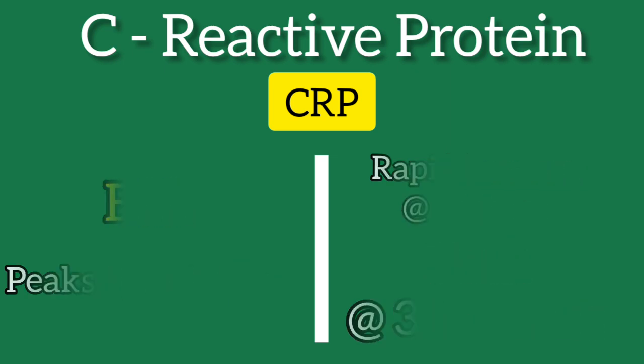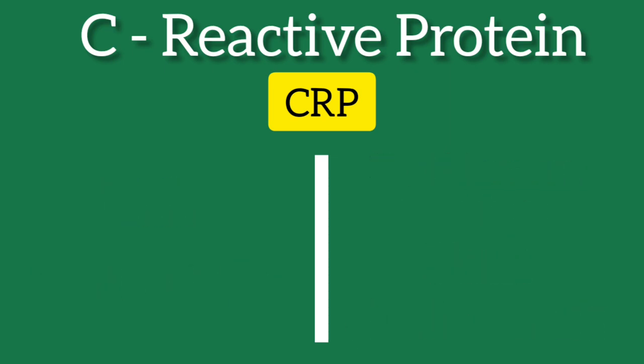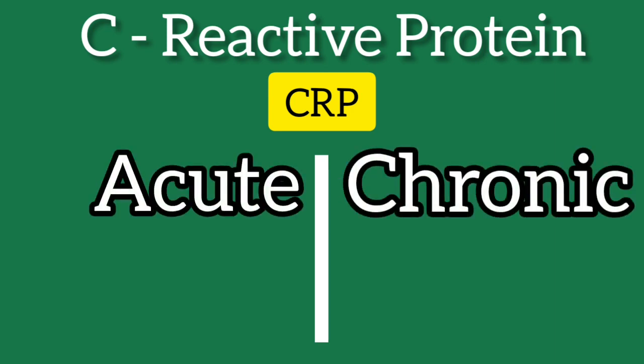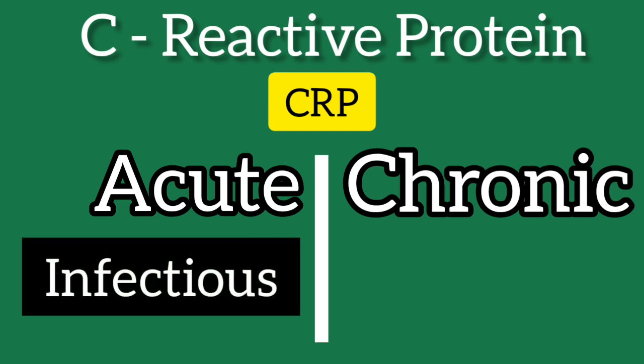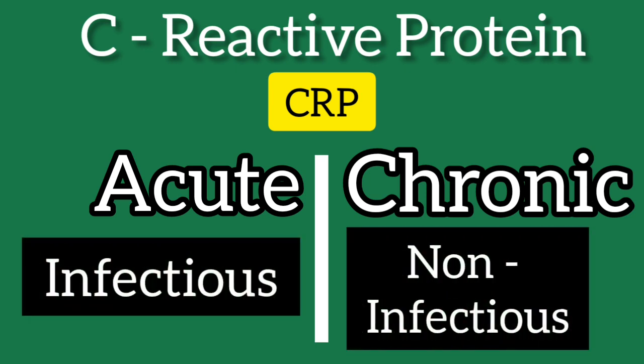There are numerous causes of elevated C-reactive protein levels. These include acute and chronic conditions, and can be infectious or non-infectious in etiology. However, markedly elevated levels of CRP are most often associated with an infectious cause. Persistently elevated CRP levels can be seen in chronic inflammatory conditions such as chronic infections or inflammatory arthritis such as rheumatoid arthritis. Even trauma can cause elevations in CRP.